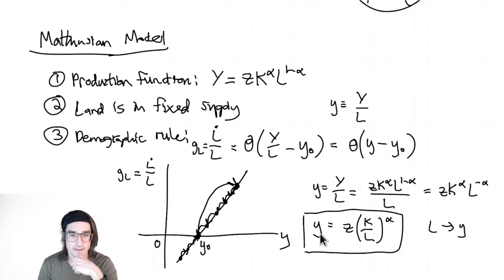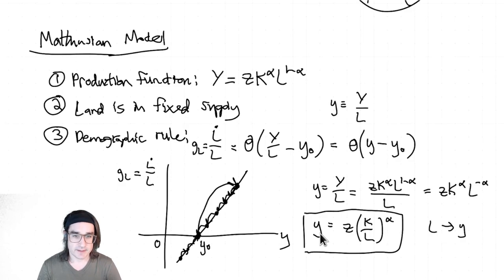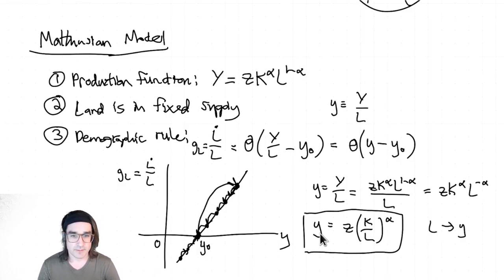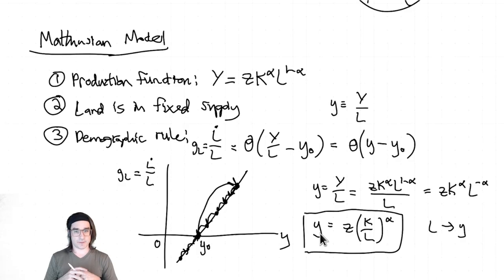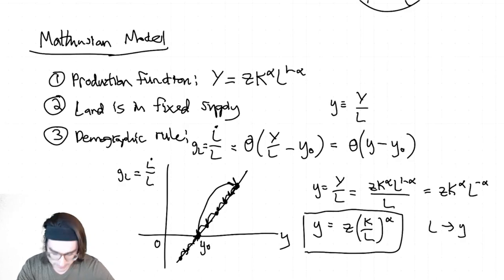Empirically you could ask: when the Black Death occurred, did incomes actually go up? That's complicated because there are many types of shocks to society during such a traumatic event — you lose people with knowledge, relationships, psychological scarring, huge negative effects that could swamp the land-per-person effect, plus destabilization of society. Empirically you don't really see a huge amount of income movement, which is a sense in which this model isn't capturing everything about that particular event.